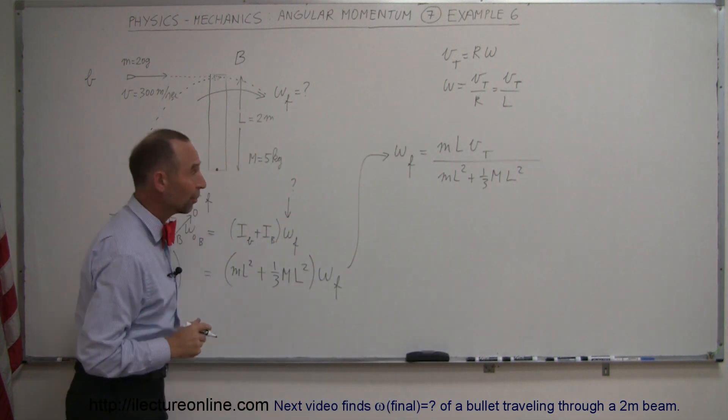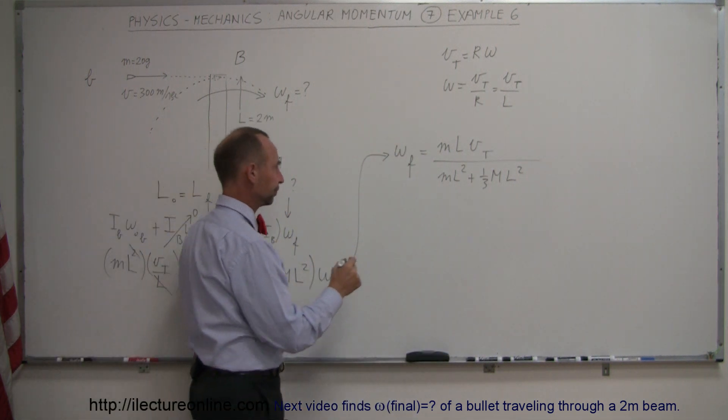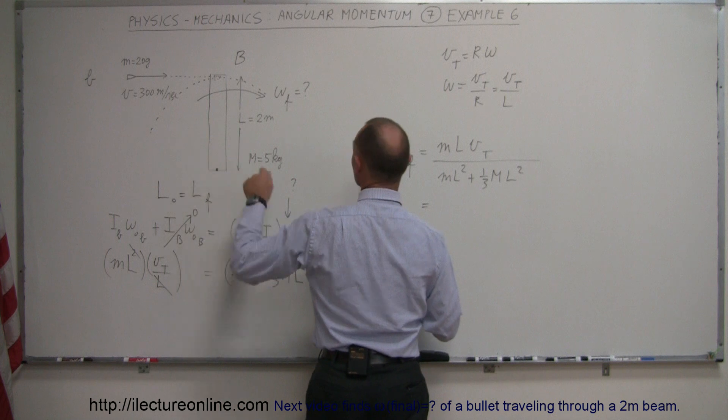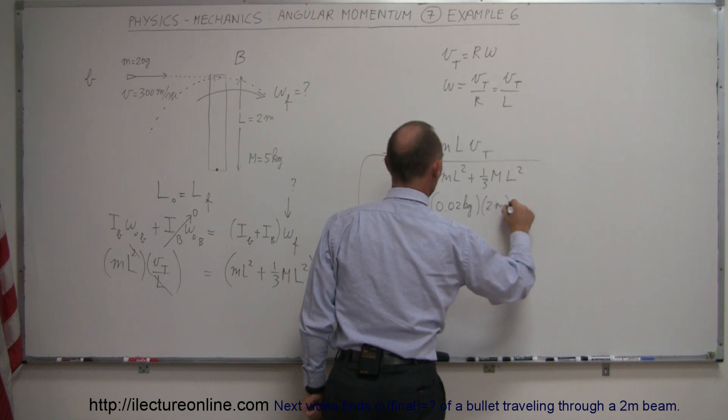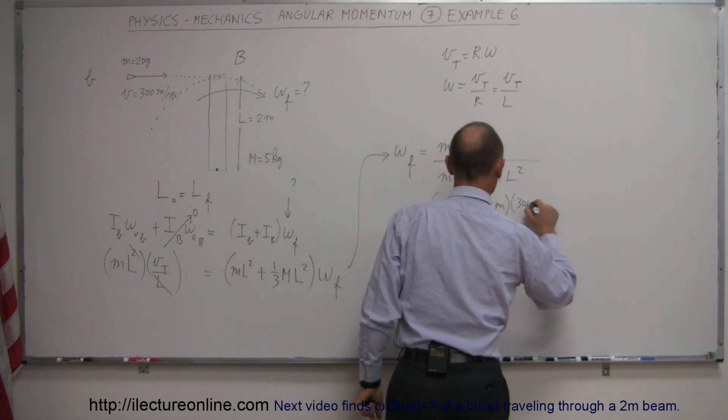Now we're ready to plug in the numbers and find the final answer. Mass of the bullet: 0.02 kilograms. The length of the beam: 2 meters. The velocity of the bullet: 300 meters per second.